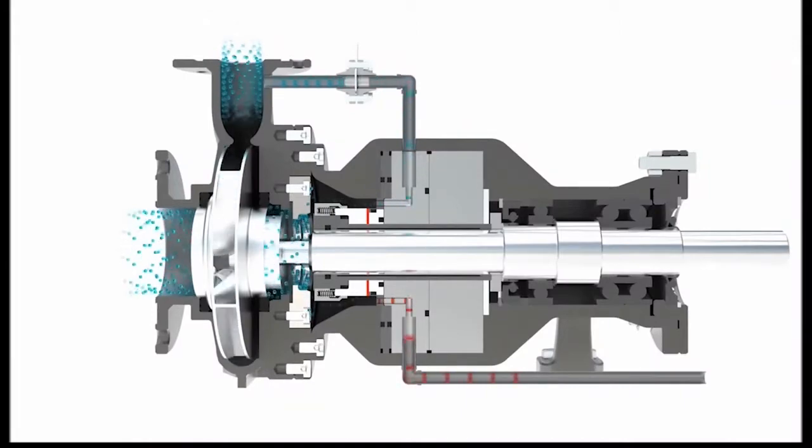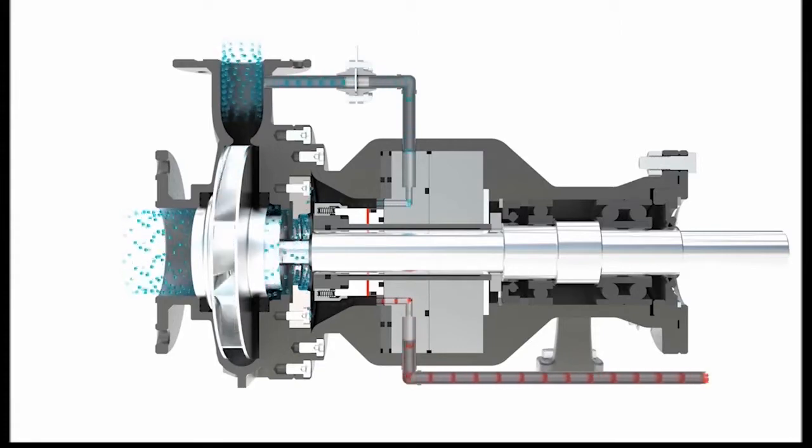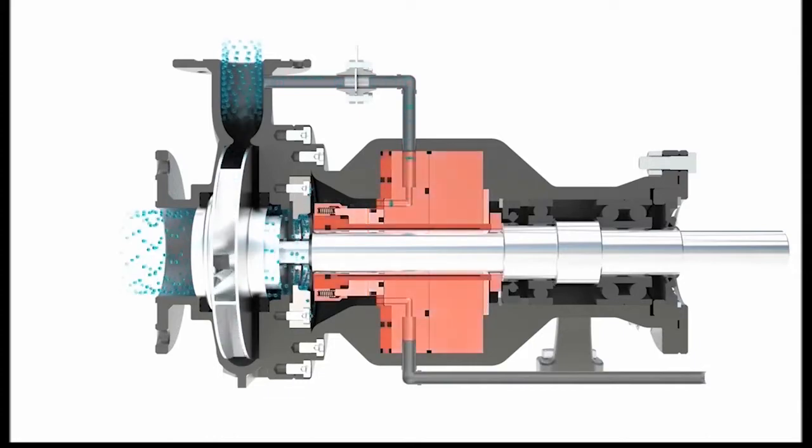The composition of process fluid is constantly changing and unknown for API plans that route flush fluid back into the process. Production downtime and significant repair costs are incurred if the pump seal fails.